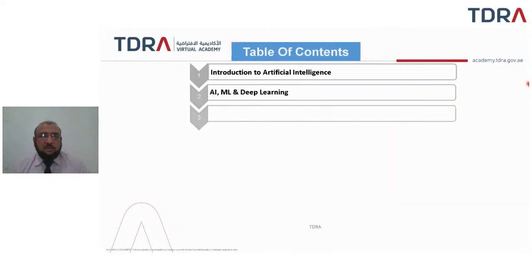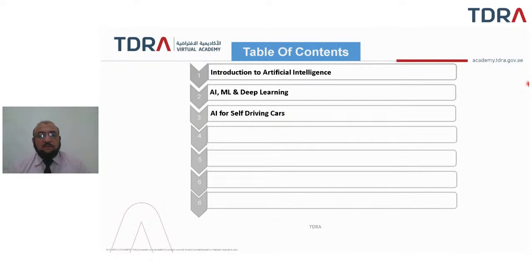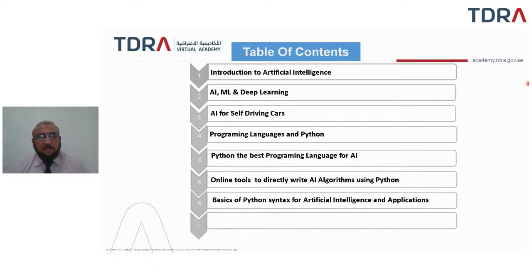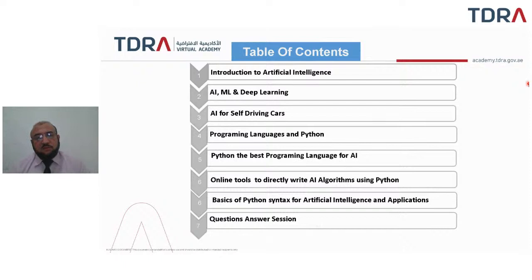We have this table of contents: first is introduction to artificial intelligence, then we will learn about AI, ML, and deep learning. Then we will go through AI for self-driving cars, programming languages and Python, why Python is the best programming language for AI, online tools for writing AI algorithms in Python, basic Python syntax for AI, Python AI applications, and finally a question and answer session.